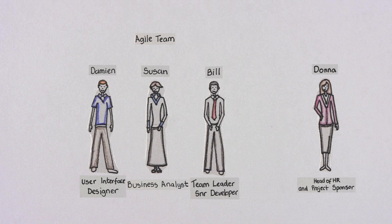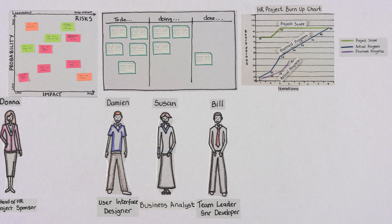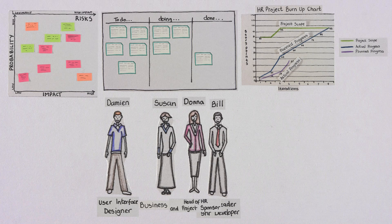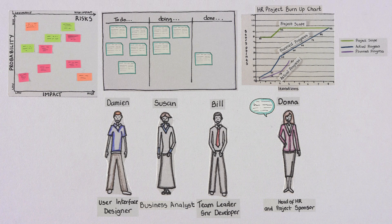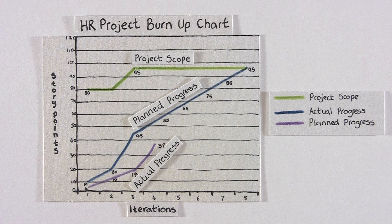Donna, the head of HR and the business sponsor of the new employee performance review system, is visiting the team delivering this new system. She looks at the story wall and stops at the HR project Burn Up Chart. She says: 'Hey guys, this looks like an interesting chart, can someone explain it to me please?' Susan, the business analyst on the team, volunteers to explain. 'Sure Donna, this is our release Burn Up Chart. It shows you the progress we're making against the release plan.'